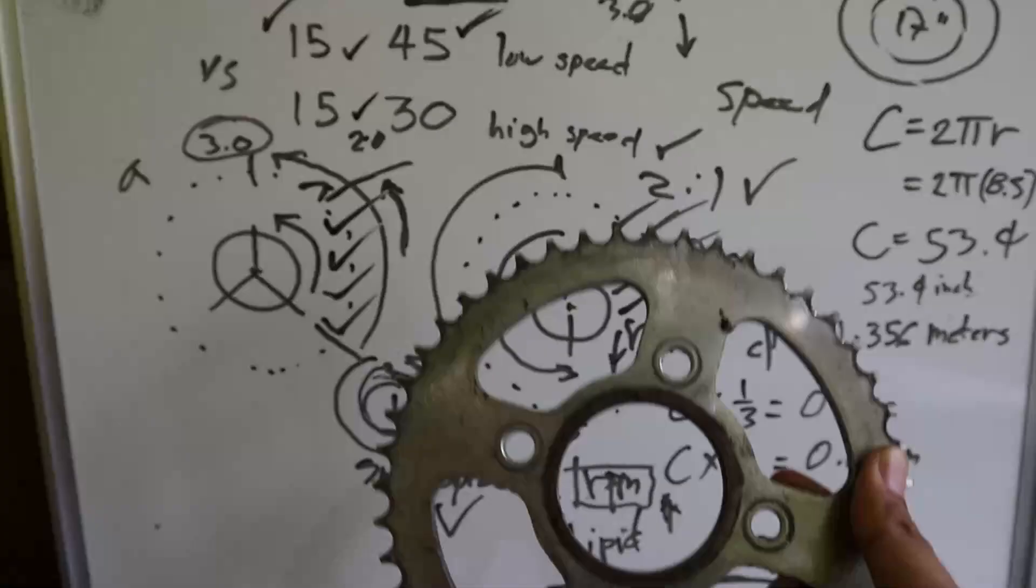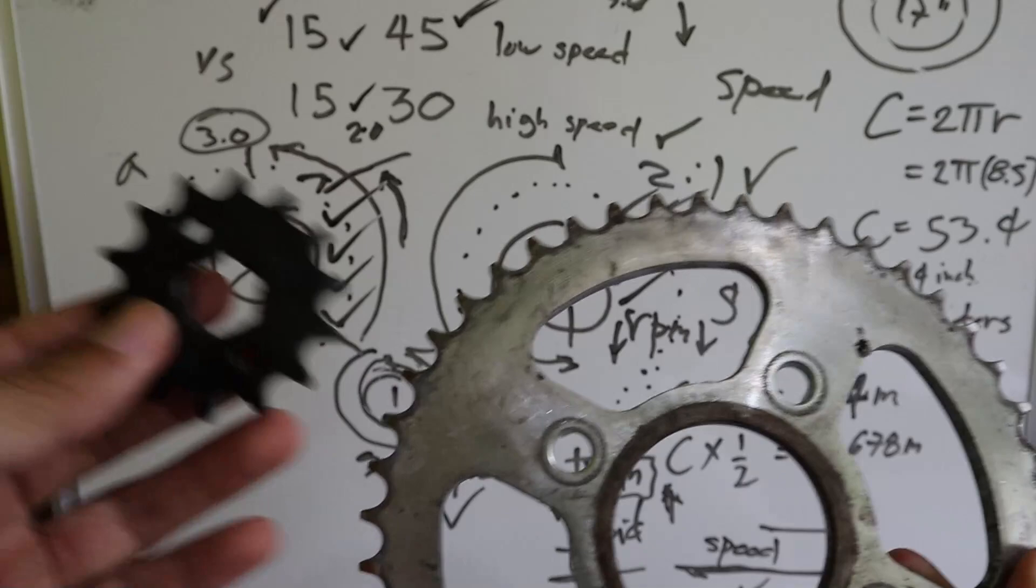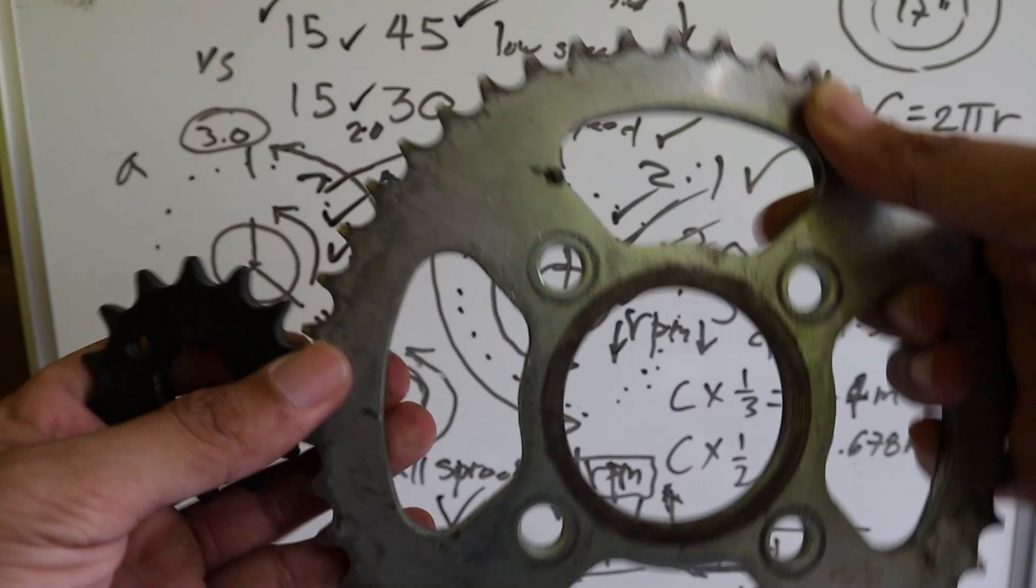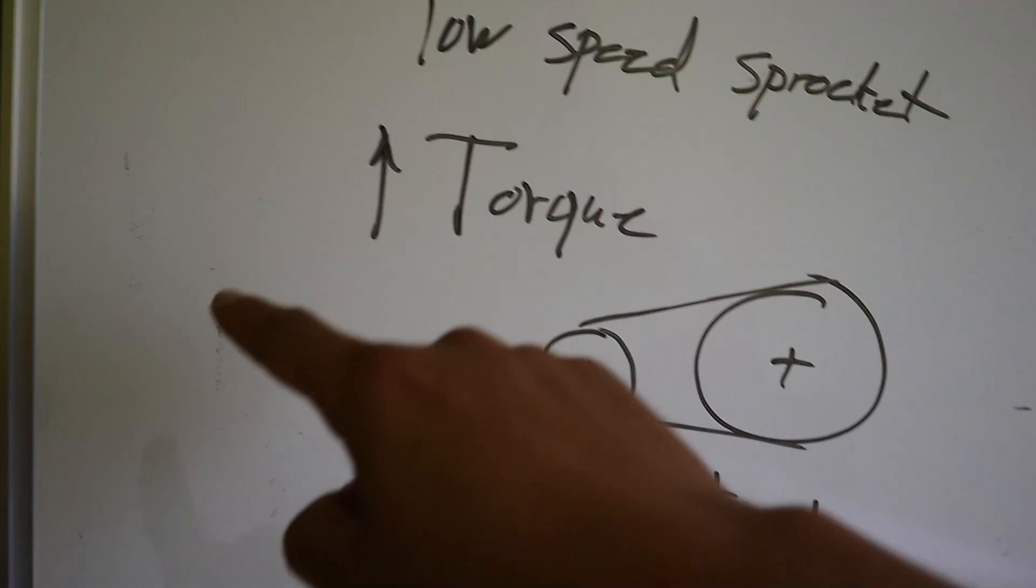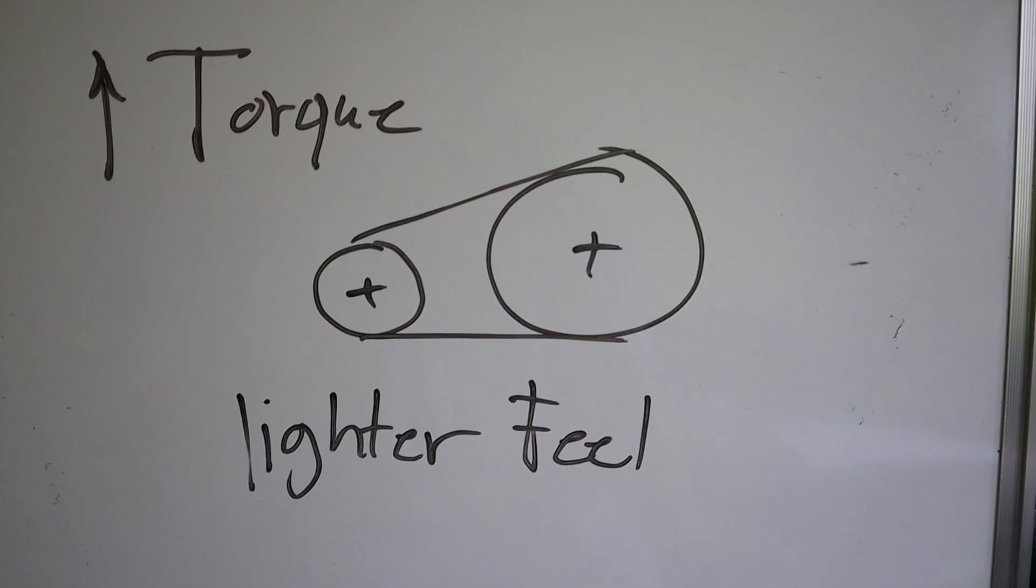Ang ating activity kanina sa umpisa ng video, nagpalit ako ng 14-48. It's low speed sprockets, high torque. Dahil gusto kong mag-practice mag-wheelie. Yun lang yung sprocket size na meron ako access sa pinaka low speed para pataasin ang torque at maging magaan ang motor.